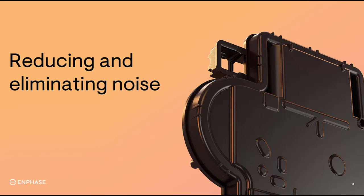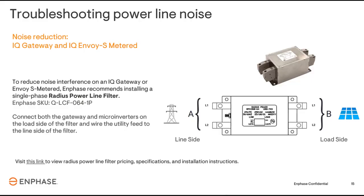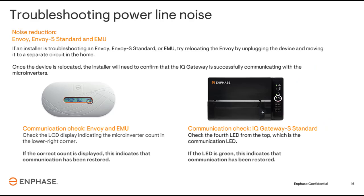Once you've identified that there is noise affecting the communications, you'll want to mitigate it and restore power line communications. There are a few options to consider based on what gateway product is installed. For gateways that are wired to a breaker, such as the IQ Gateway and the Envoy S-Metered, you can install an in-line filter to reduce electrical noise. Connect both the gateway and the microinverters on the load side of the filter and wire the utility feed to the line side of the filter. If the gateway is the pill-shaped Envoy, Envoy S Standard, or EMU, try unplugging the device from the wall and relocating it to a different circuit. You can confirm the issue is fixed by checking the lower right of the LCD screen on the Envoy and confirming that all inverters are communicating.